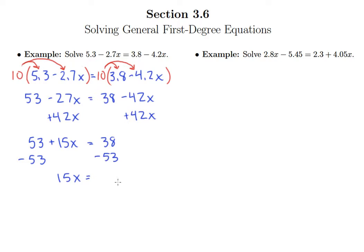So 15x equals, let's see, the difference of 53 and 38 is 15, so this is going to be negative 15. And so dividing by 15 gives us that x must equal negative 1.